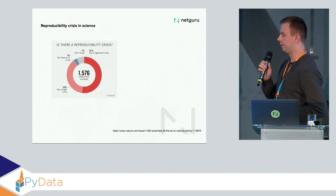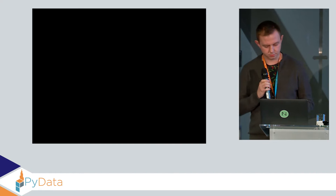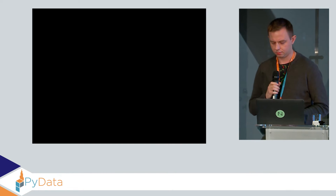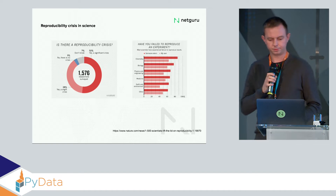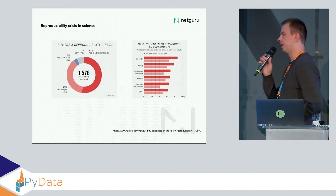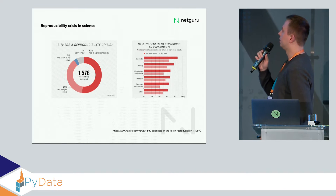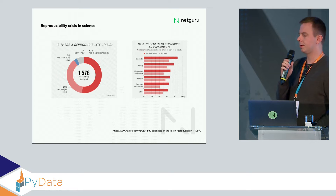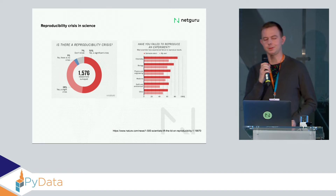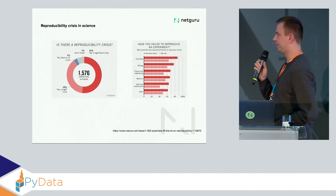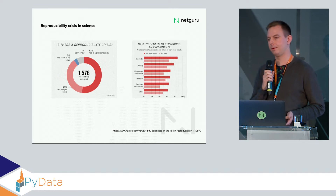But the most horrific fact comes from the follow-up question they asked: 'Have you failed to reproduce your own experiments or someone else's?' For each subfield, more than 50% of people said they failed to reproduce their own research. For me, it's crazy — how can research be of any significance if we can't actually reproduce it, even our own research?